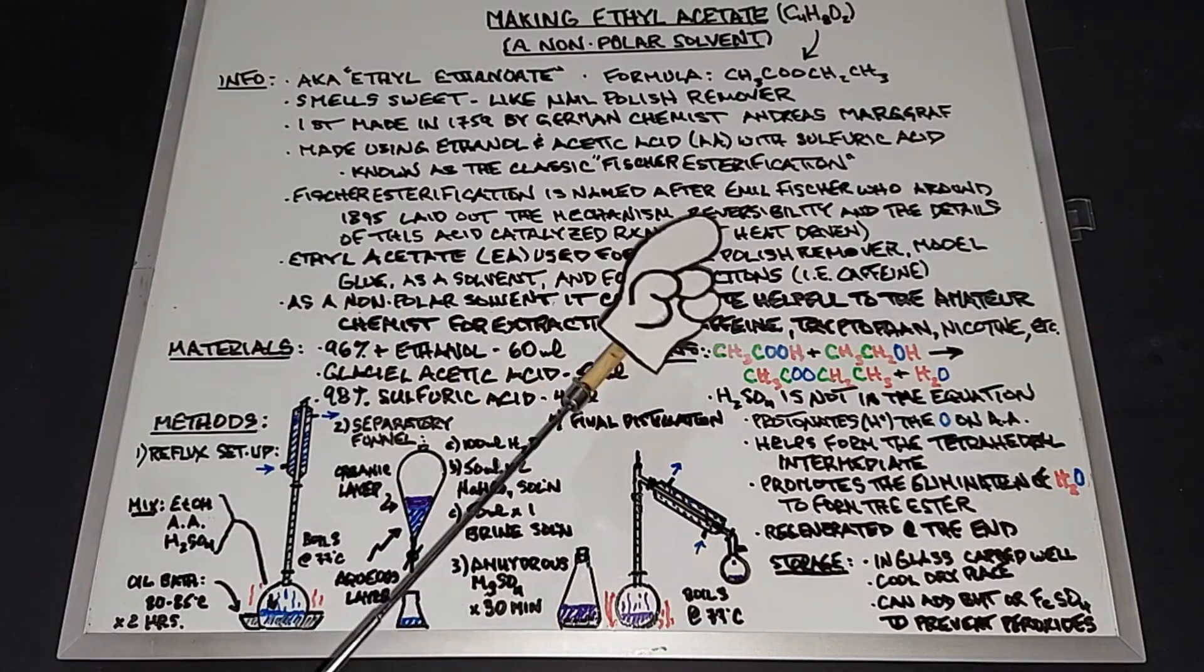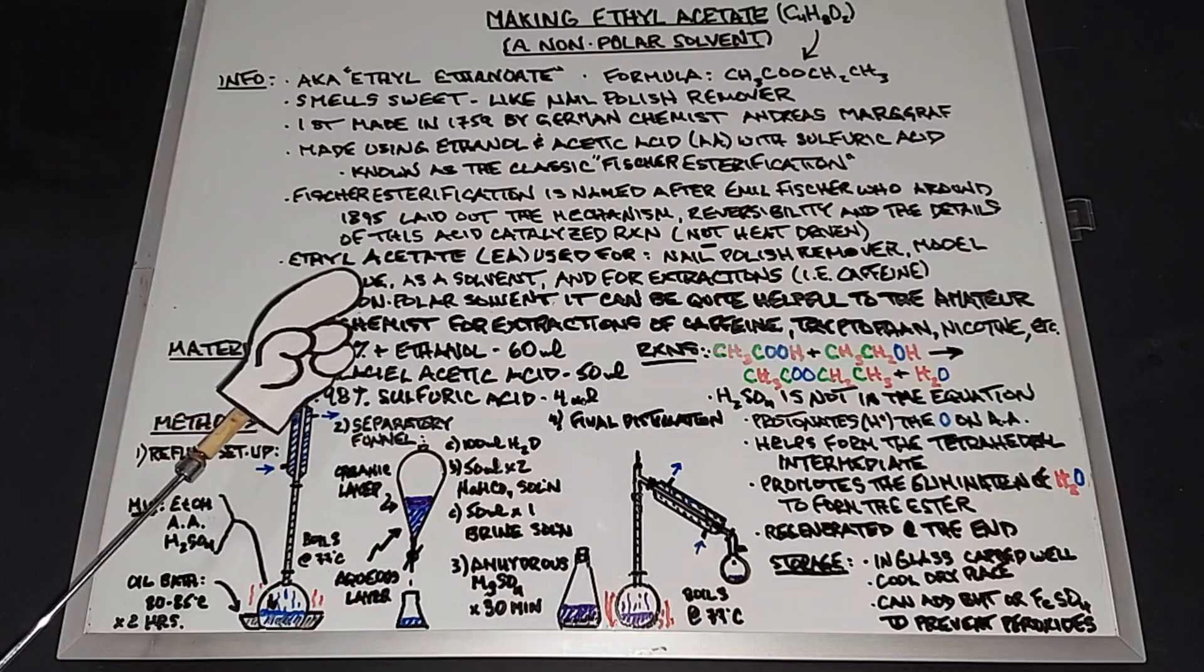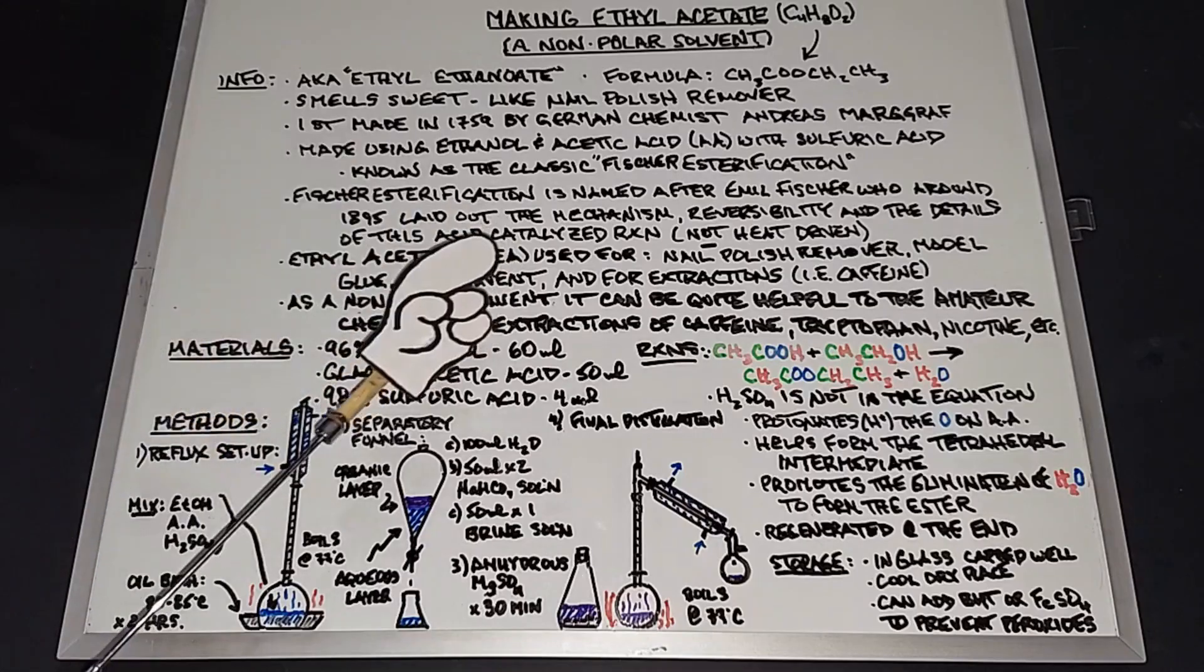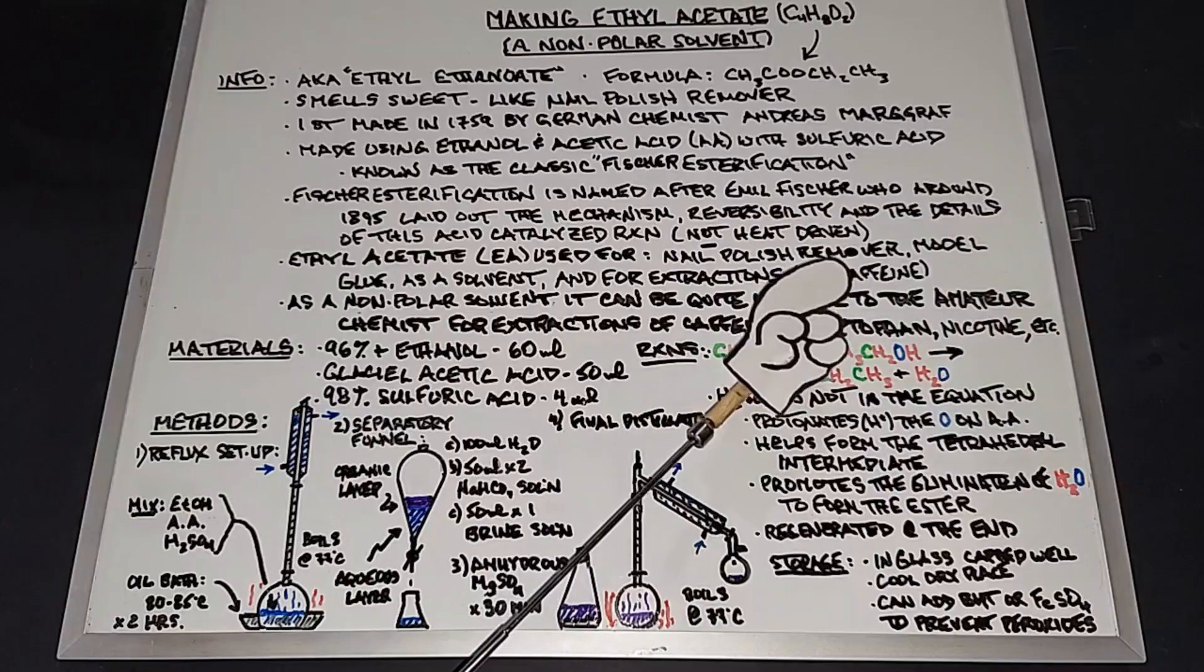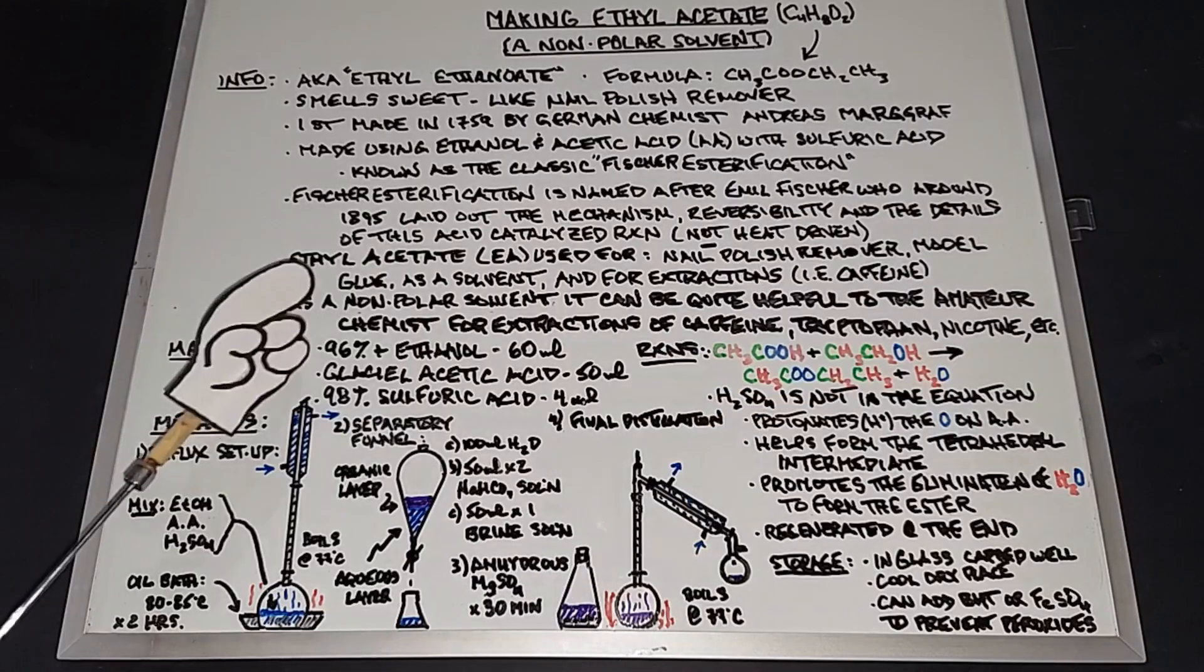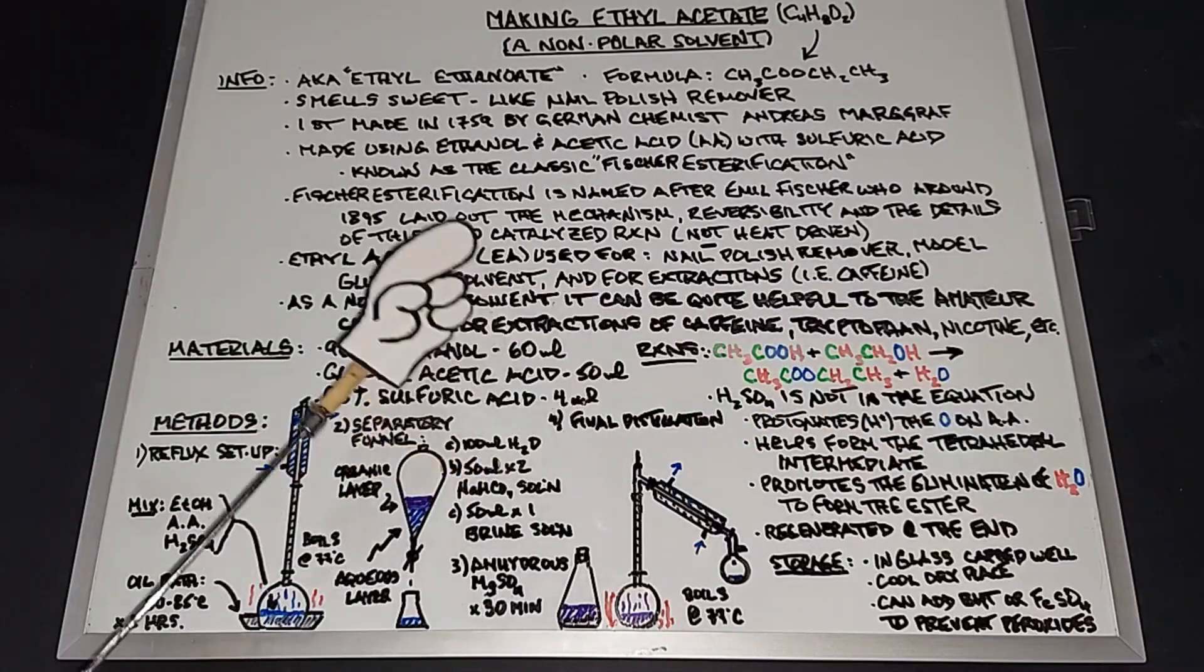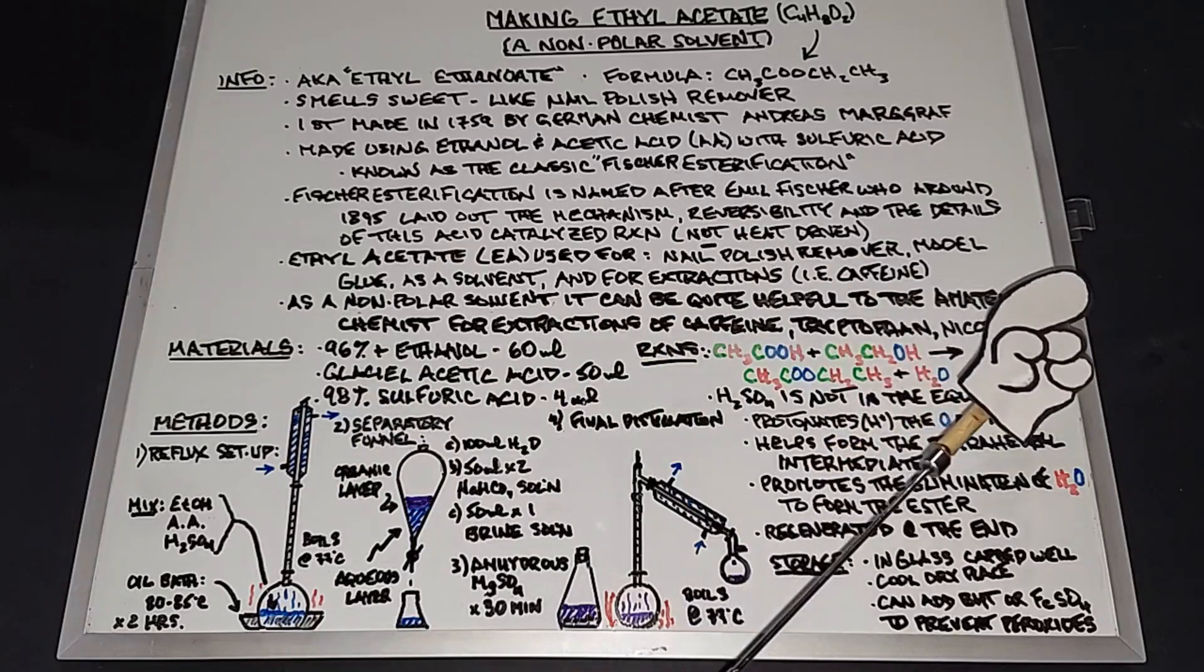Ethyl acetate is used for nail polish remover, model glue - and it works as model glue because it actually melts the plastics together rather than just adhering them. It works as a solvent and for extractions because all of the decaffeinated coffee that we drink today comes from using ethyl acetate to remove the caffeine. As a nonpolar solvent, it can be quite helpful to the amateur chemist for extractions of caffeine, tryptophan, nicotine, and quite a few others.